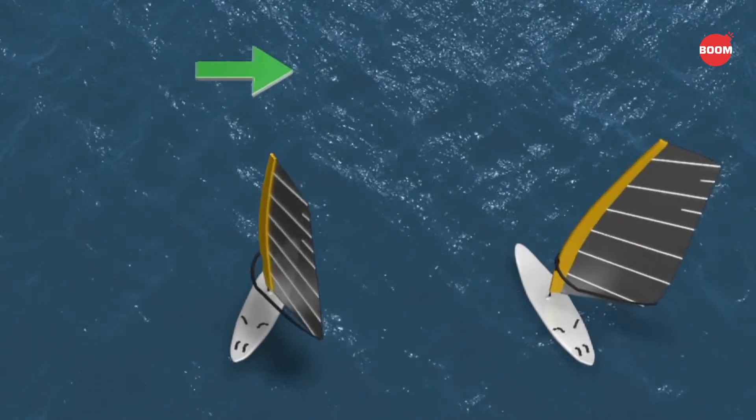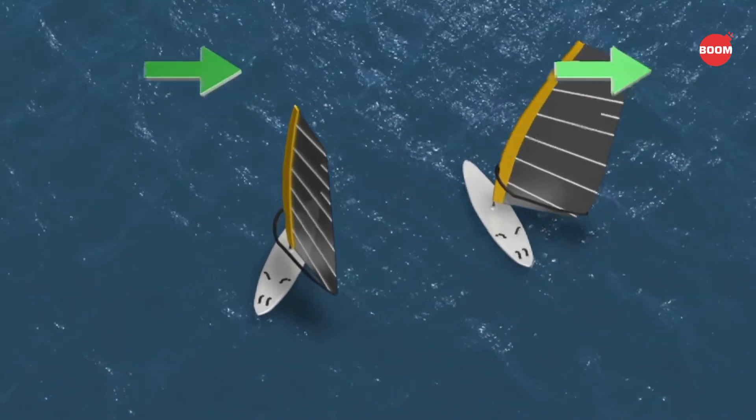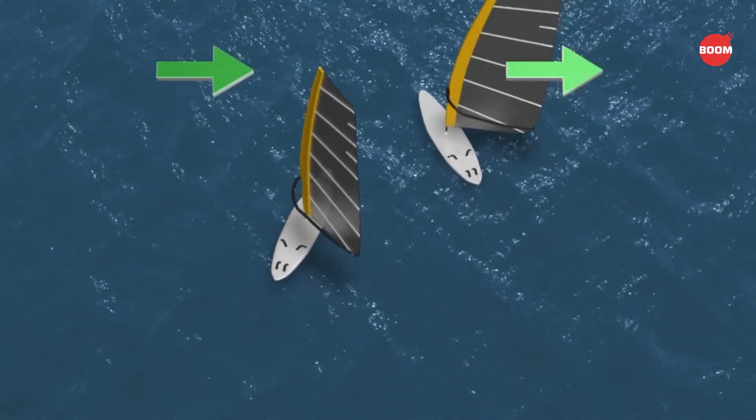When two sailboats approach each other on the same tack, the leeward boat has the right of way over the windward boat.